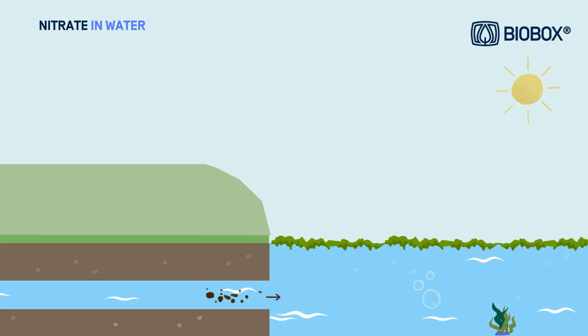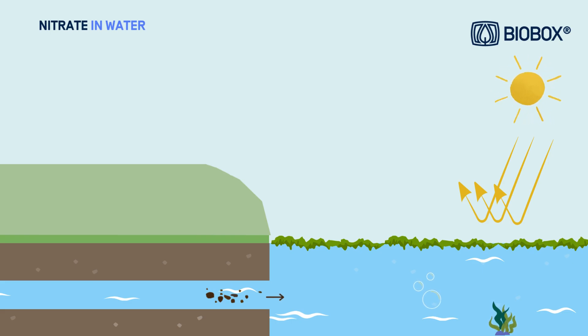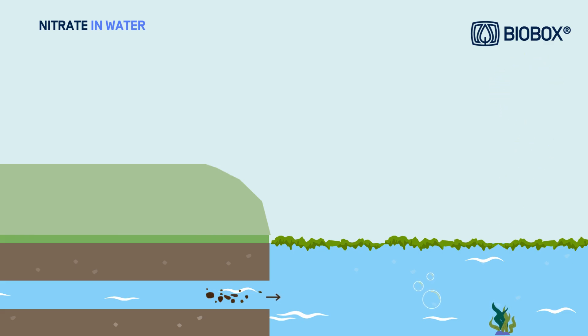As algae accumulate on the surface of the water, they block sunlight from reaching the bottom of the ecosystem. This also increases water turbidity, which further impacts the quality of the environment.